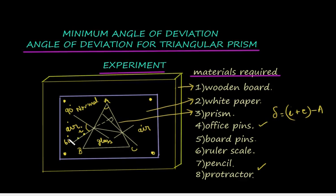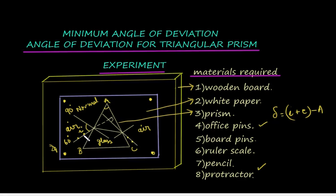Now the prism is replaced on this outline and two office pins are fixed at this point — they should be perfectly vertical. When you look at these two pins from the other side, you have to look using one eye while closing the other. They should appear to be in the same line. Look at these two pins from side AC and fix two more pins where you find the image — the four pins should appear in a line.